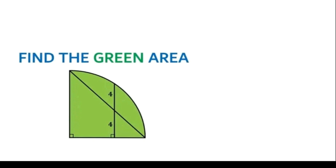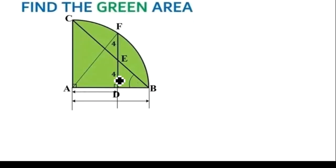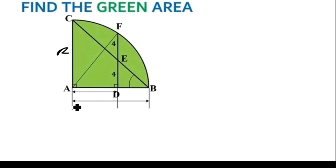Welcome back viewers. How do we find the green area? We'll start by labelling this figure as ABCDF. You can see the length AC is the radius R, and the length from A to B is also the radius R.